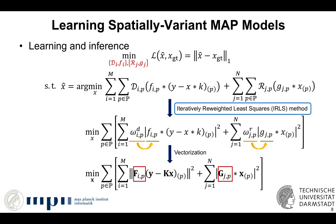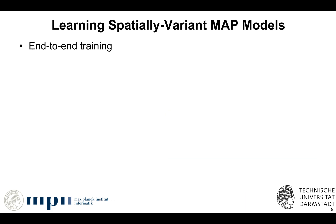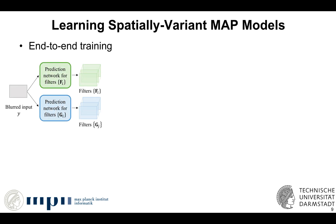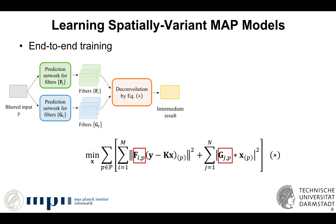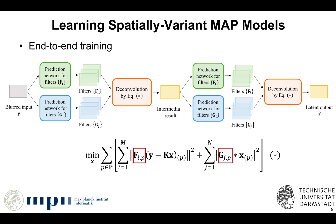The whole training process proceeds as follows. We first predict the image-adaptive and pixel-dependent filters f and g from the blurry input. Then we obtain an intermediate latent image from the spatially-variant MAP model. This completes one IRLS iteration, and we use two iterations in total, considering both effectiveness and efficiency. The whole process is trained in an end-to-end manner.